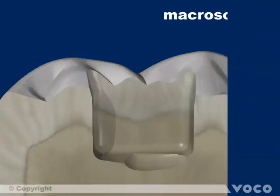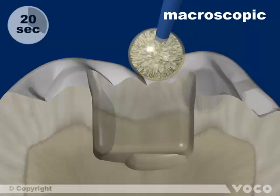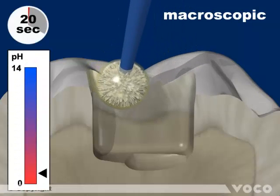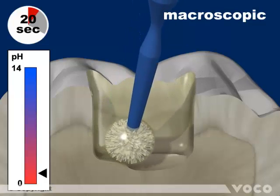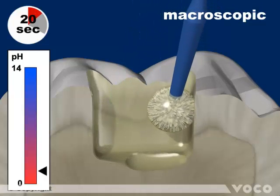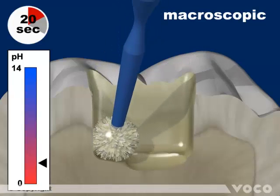Applying the Futurabond U and completely wetting the entire cavity for 20 seconds. The initial acidic pH value rises during this process to a neutral level.